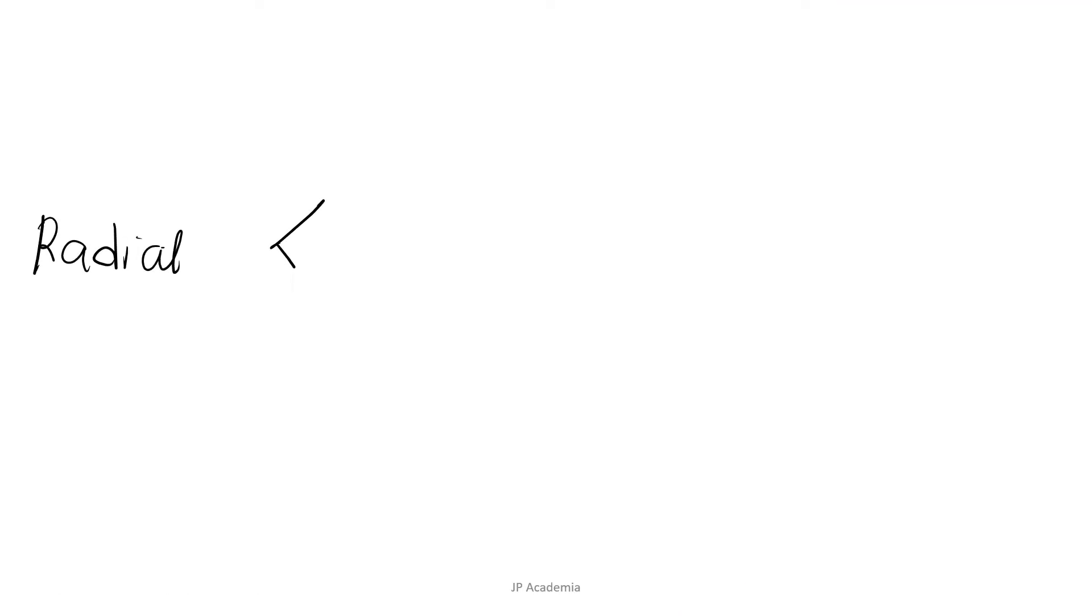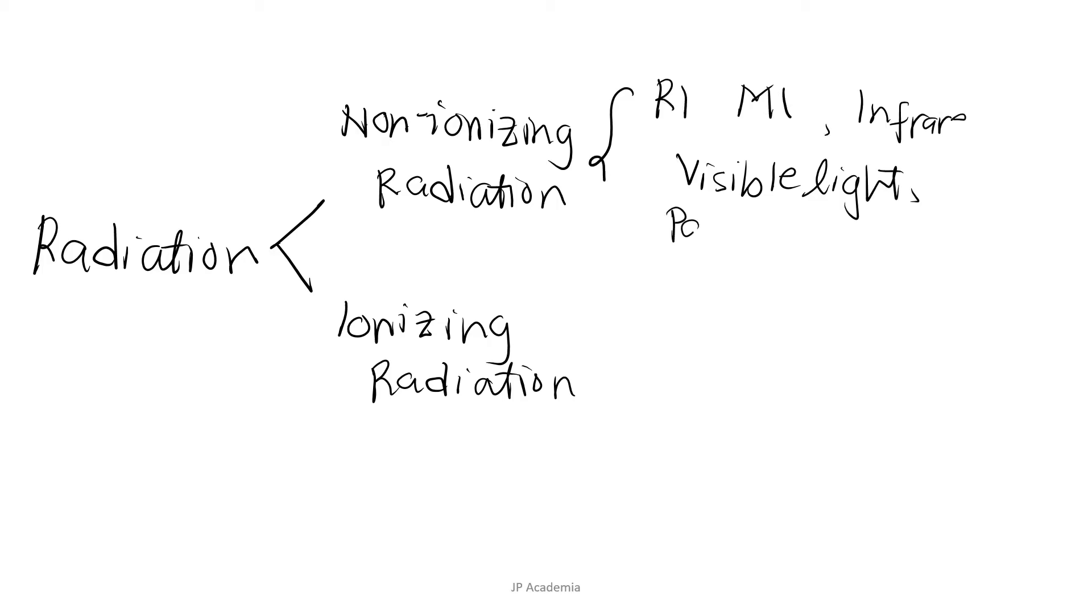As we have stated in the previous discussion, radiation is classified into two: we have non-ionizing radiation and ionizing radiation. Non-ionizing radiation does not have enough energy to ionize matter. It refers to all electromagnetic radiation that do not have enough energy per quantum to ionize atoms or molecules. It includes the following: we have the radio frequency, microwave, infrared, visible light, and part of the UV, specifically the near UV.